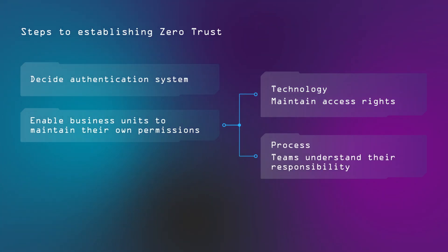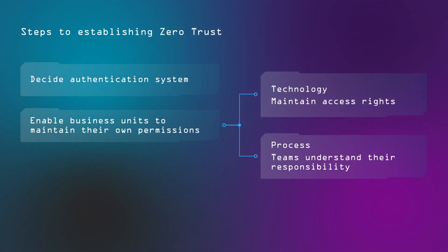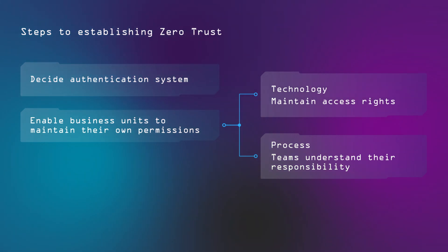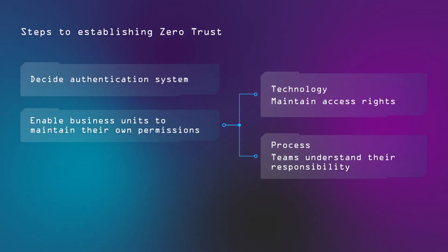So those were the main two steps: choose your central authentication system, and enable teams to decentrally set authorization permissions for any application that is critical to your business.